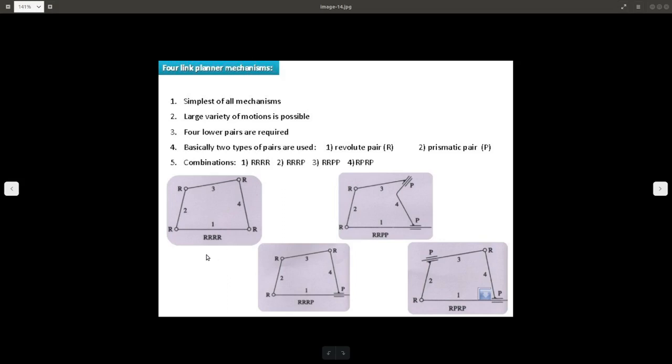If you see this mechanism, in this mechanism all the pairs are just revolute pair. This is being represented as RRRR.